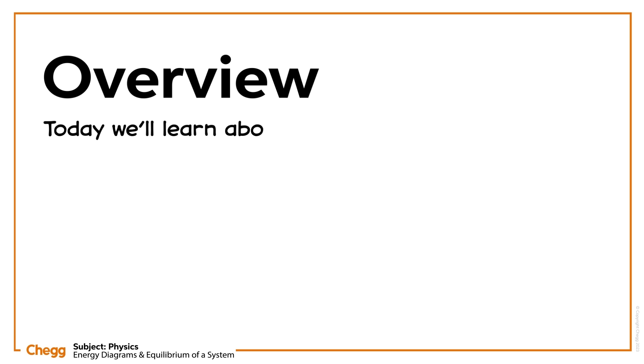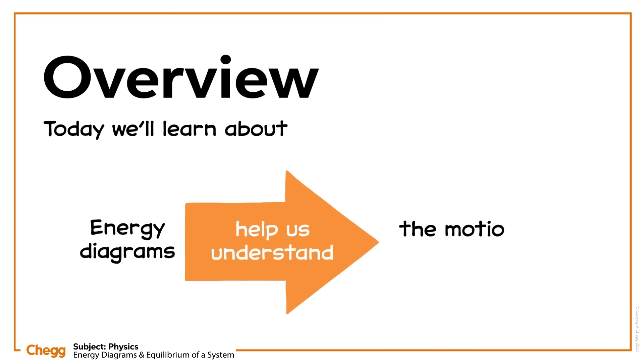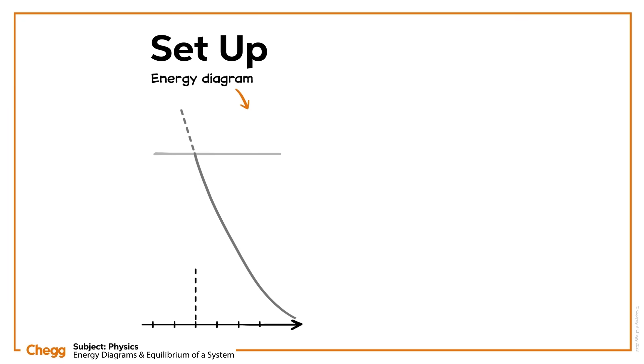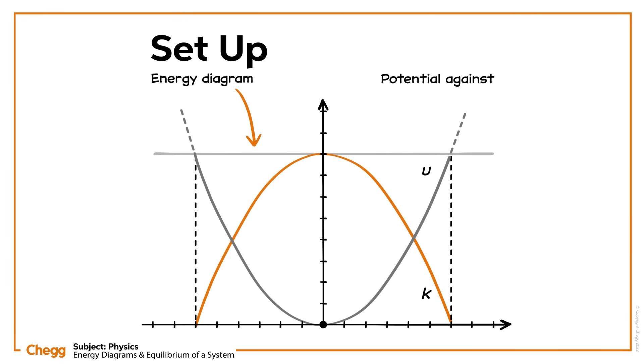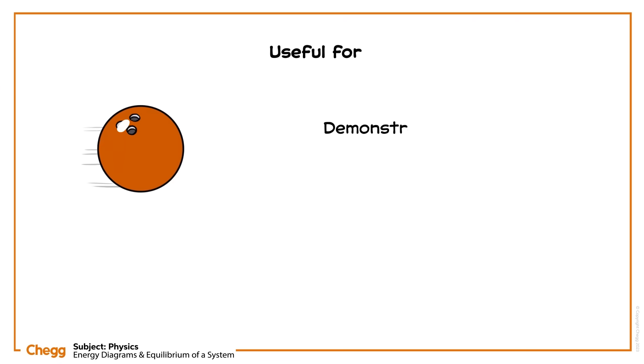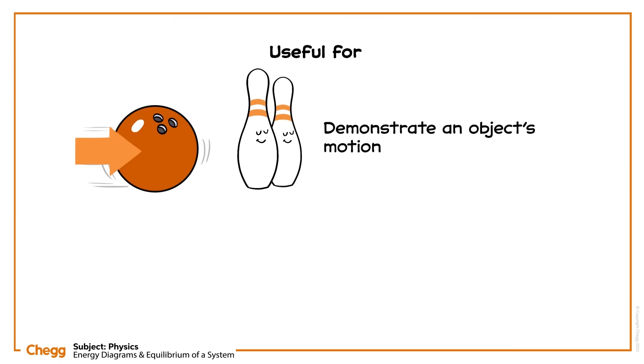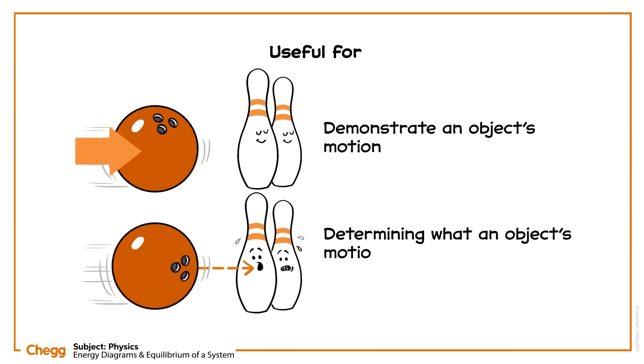Hi there. Today we'll learn about energy diagrams and how they can help us understand the motion of a system qualitatively. Energy diagrams are graphs showing potential energy against the position of a system. They're really useful for demonstrating an object's motion as well as determining other things, like for example, what an object's motion would look like if the motion continued.